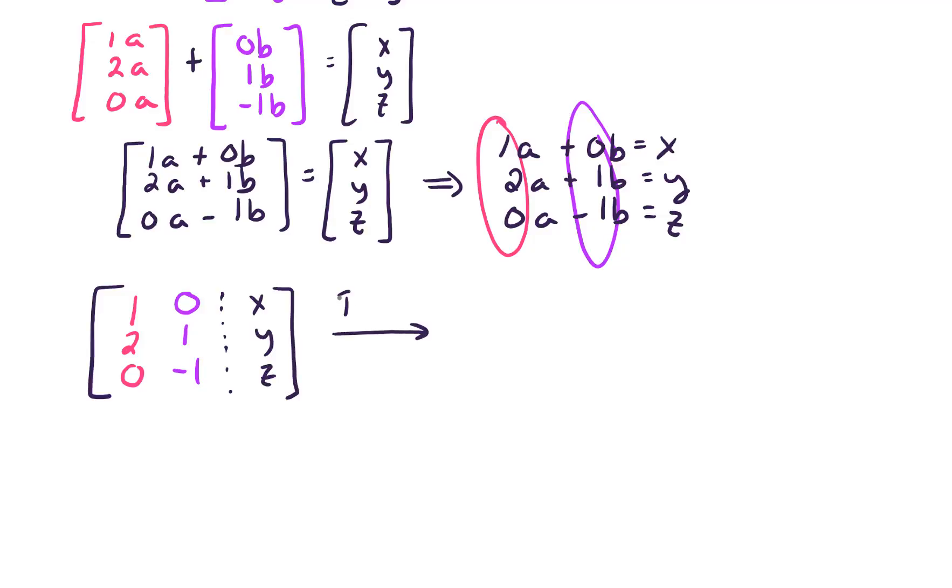And when we RREF this, well actually let's go through the steps to do that, because it's a little more complicated keeping track of the x, y, and z. So first thing, let's multiply negative 2 times row 1, add it to row 2, and put that result in row 2.